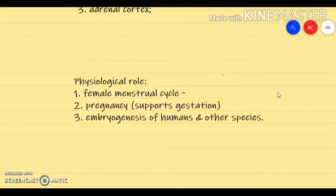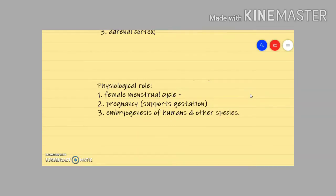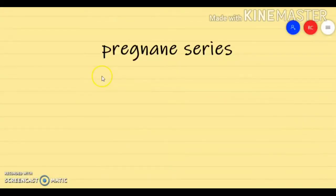Progesterone is often called the hormone of pregnancy. It supports gestation — it plays an important role in the implantation of the embryo, embryogenesis, and growth of the fetus, that is in the maintenance of pregnancy. Another important role of progesterone is in the female menstrual cycle.